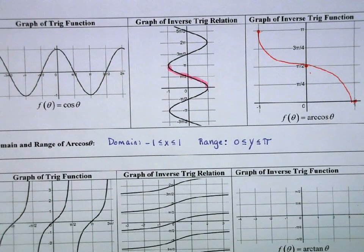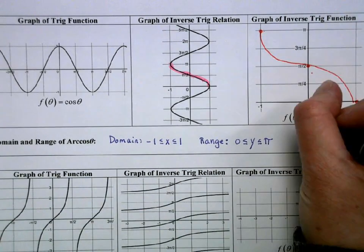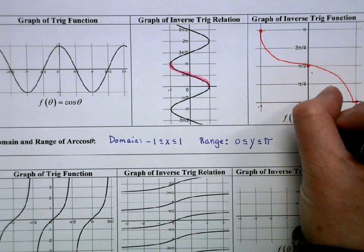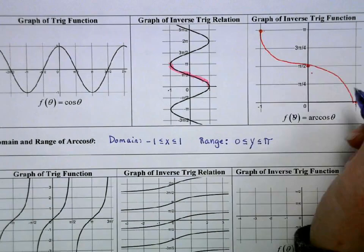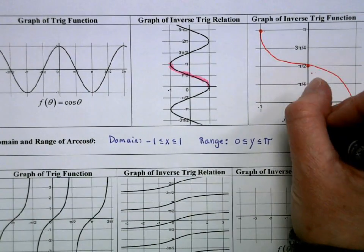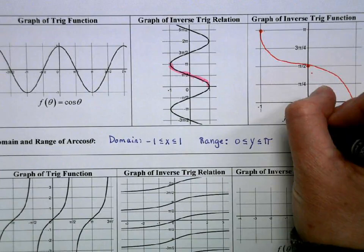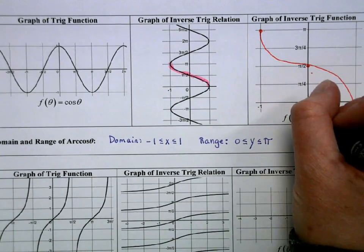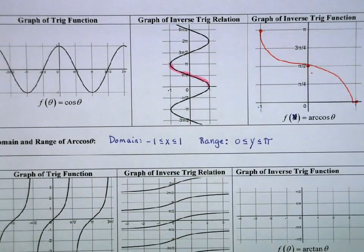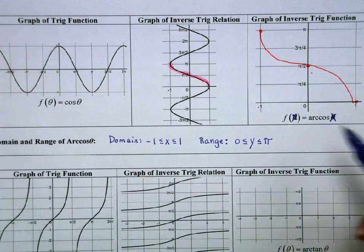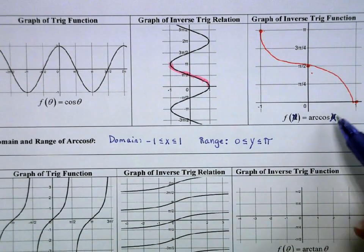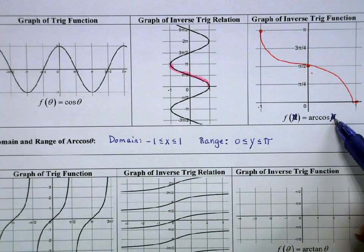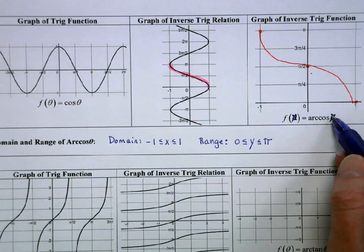I'm realizing my notes have an error — the labels should technically be x's, not thetas, because our inputs are not thetas here; we're getting thetas out. So apologies about that.